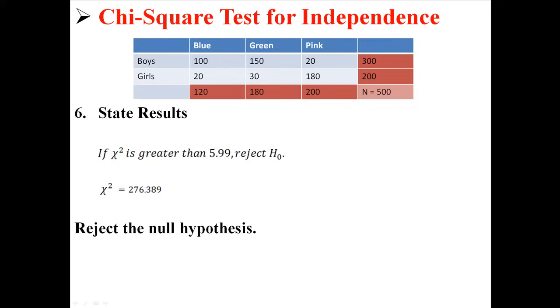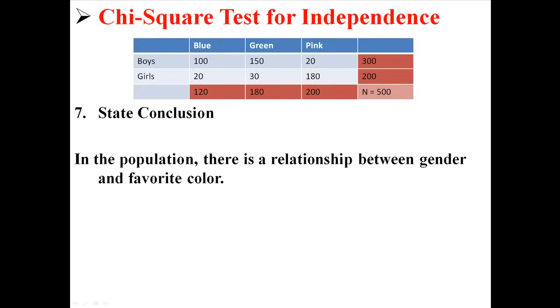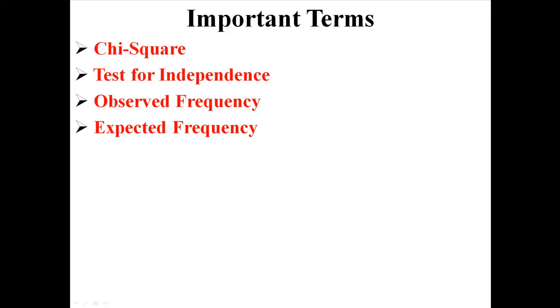So our result is, because our chi-square was greater than 5.99, it was 276.389, we will reject the null hypothesis. That is to say that in the population, there is a relationship between gender and favorite color, using the chi-square test for tests of independence.